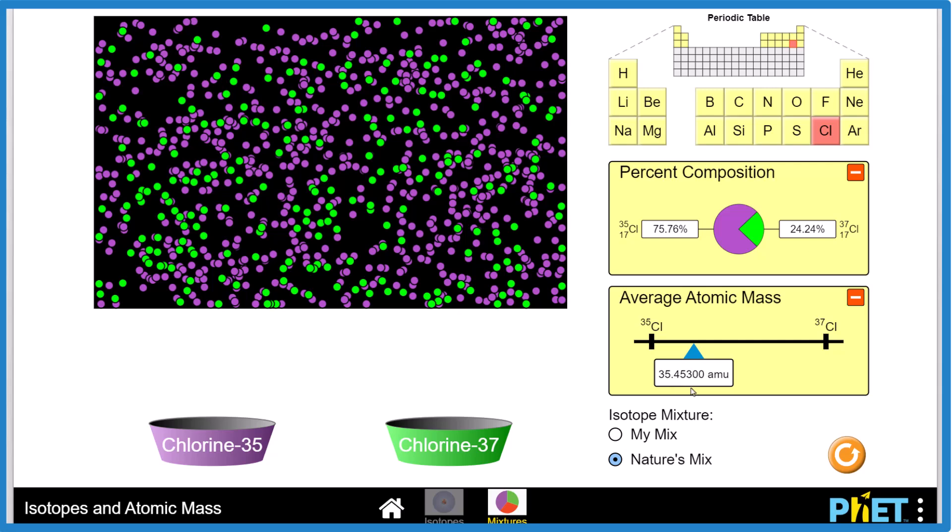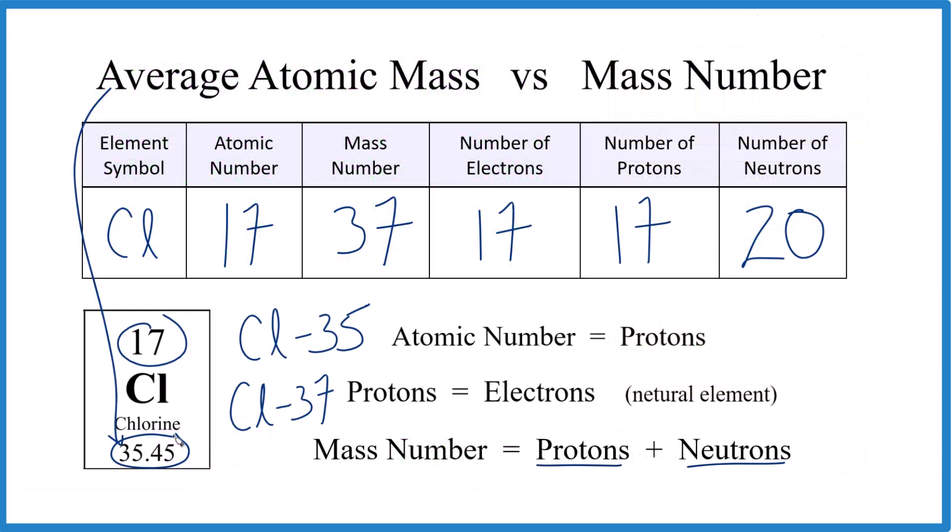35.45, that's our average atomic mass that we were talking about before. So that's it. This is Dr. B looking at the difference between average atomic mass and the mass number. Mass number applies to a specific isotope or a specific atom, where the average atomic mass, that's the averages of those isotopes for that element based on abundance. Thanks for watching.